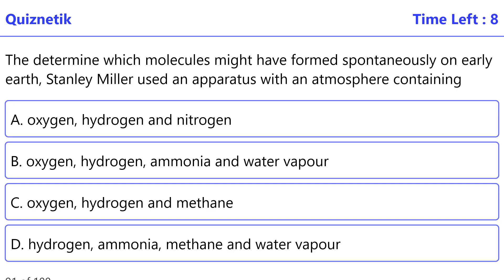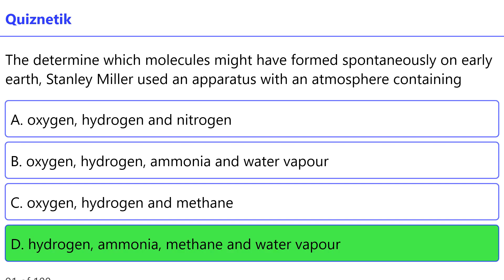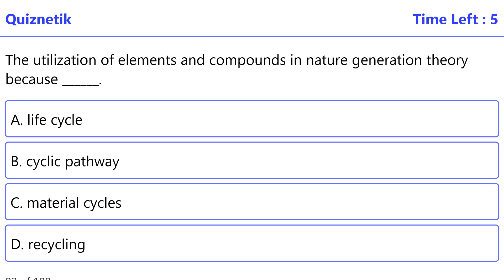To determine which molecules might have formed spontaneously on early Earth, Stanley Miller used an apparatus with an atmosphere containing — correct option is D — hydrogen, ammonia, methane, and water vapor.